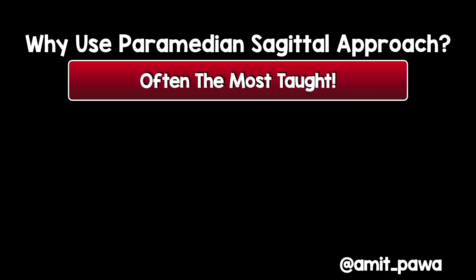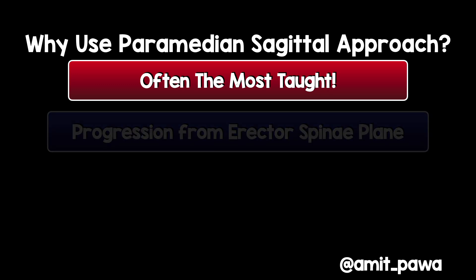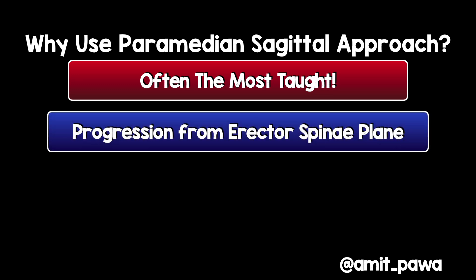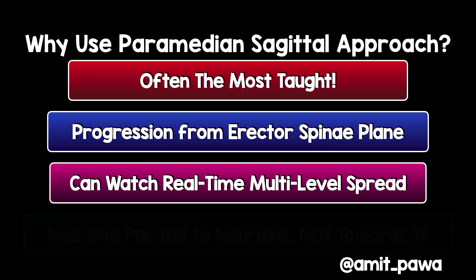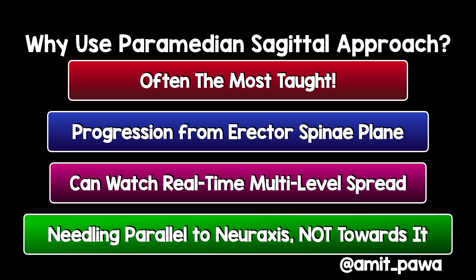So why use a paramedian sagittal approach? It's often the technique taught the most, so it makes sense to go over the anatomy. Also, many people will already be performing the erector spinae plane block, so this seems like a natural progression from that. Another advantage when doing a paramedian sagittal approach to the paravertebral space is you can watch real-time multi-level pleural drop, giving you an idea of how many spaces are involved in real time. You're also not needling towards the neural axis but parallel to it, which is another potential safety aspect.